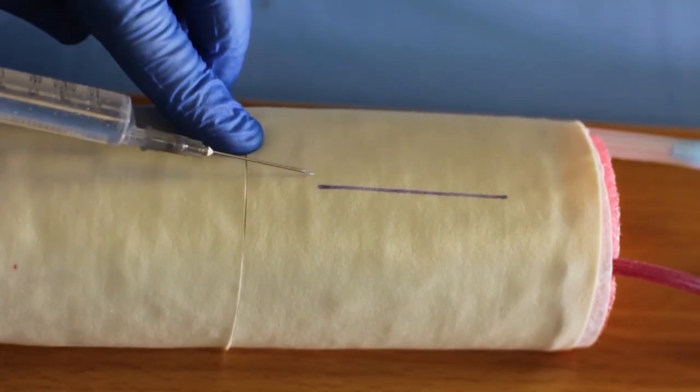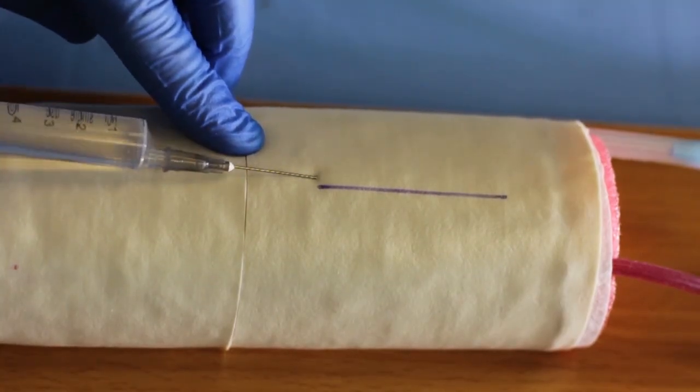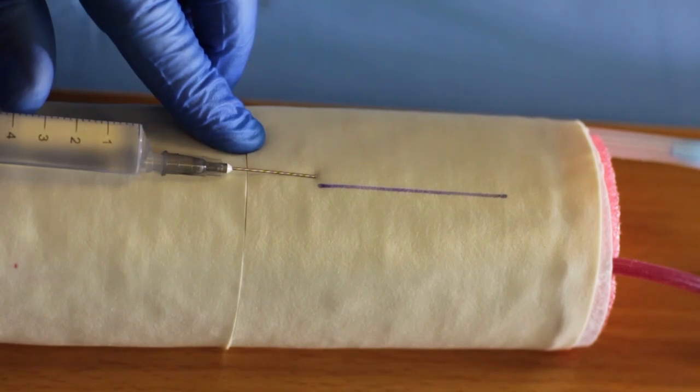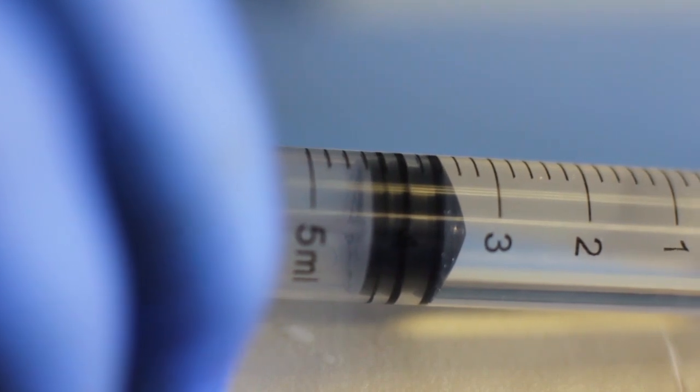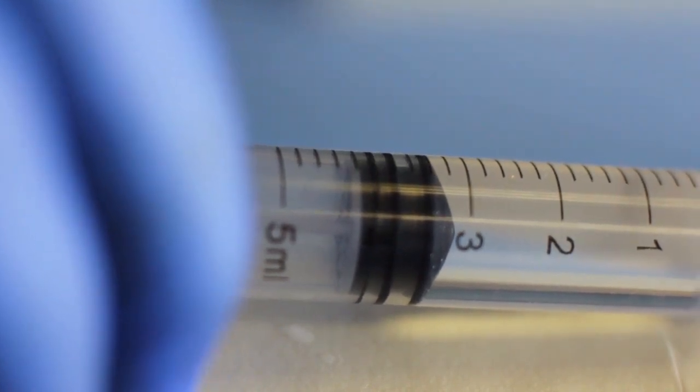Insert the needle into the tissue about 5 millimeters or one quarter of an inch away from the laceration, next to the beginning or end of the laceration. Deposit a drop or two of local anesthetic and wait for 30 to 40 seconds.